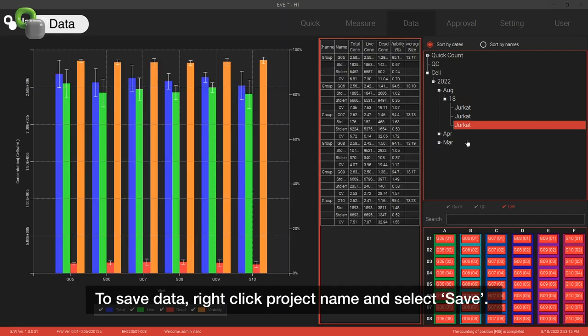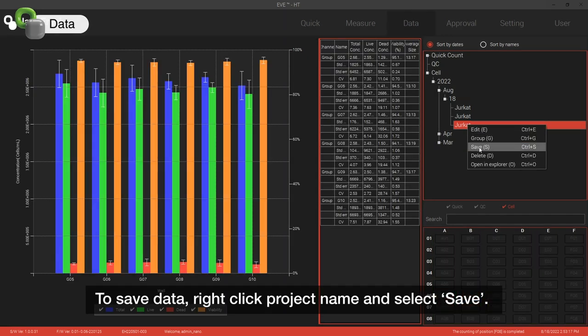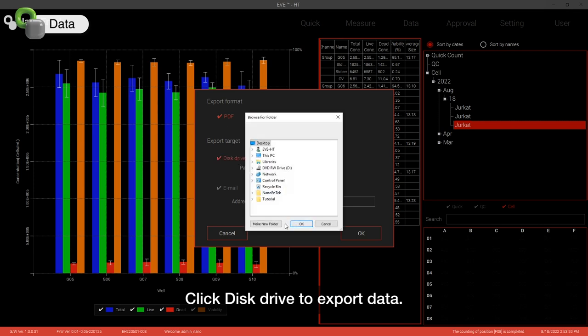To save data, right click Project Name and select Save. Click Disk Drive to export data.